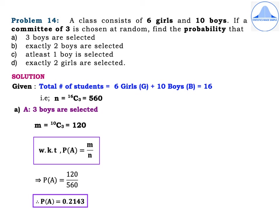Start with the first subdivision. Define event A as 3 boys are selected. M = 10C3 = 120. Writing the formula for the classical definition of probability, P(A) = M by N = 120 by 560. Therefore, P(A) = 0.2143.